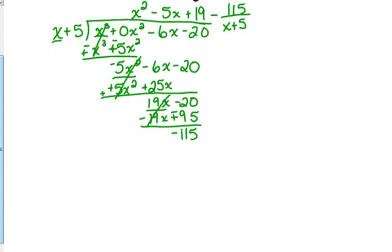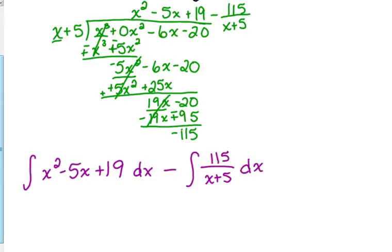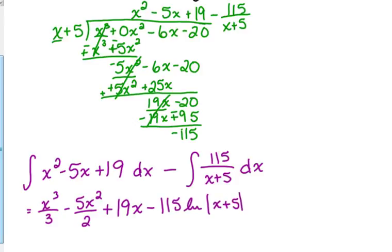We're going to integrate x squared minus 5x plus 19, which is really easy because that's just a polynomial, minus the integral of 115 over x plus 5. I went ahead and just split it up while I was at it instead of having to write it twice. So the antiderivative of x squared is x cubed over 3. The antiderivative of negative 5x is negative 5x squared over 2. The antiderivative of 19 is 19x. I'm not going to do u-substitution with this one because it's really easy. It's minus 115 natural log of x plus 5 because the derivative of x plus 5 is just 1. So we really don't need u-substitution. Don't forget the plus C on the end. We do need absolute value bars here because x plus 5 can have negative values.